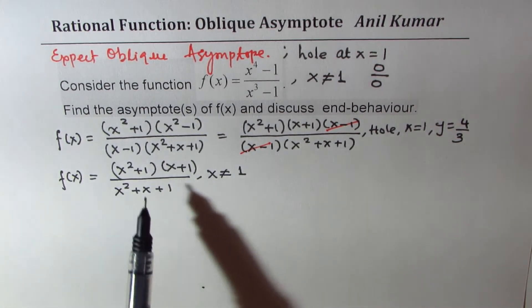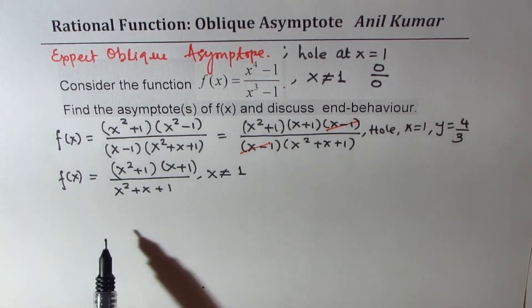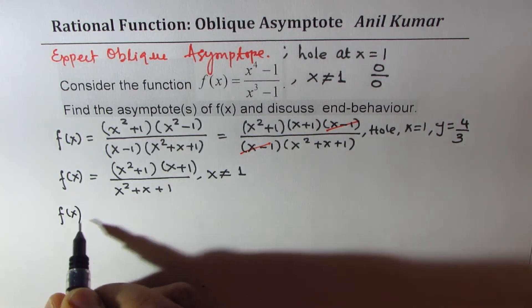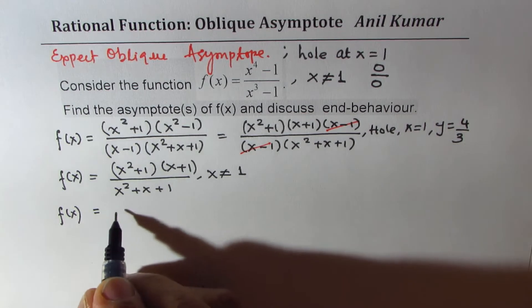Now, since the degree of the numerator is 1 higher, we expect oblique asymptote. So we need to divide to get it. We'll get back to this equation in standard form. So let me now multiply again.